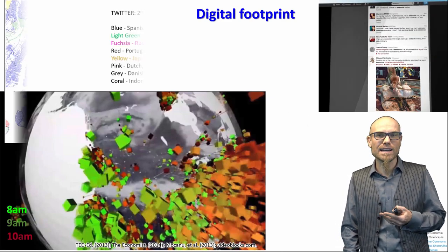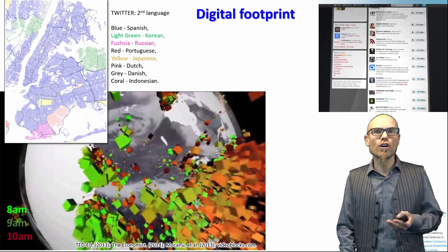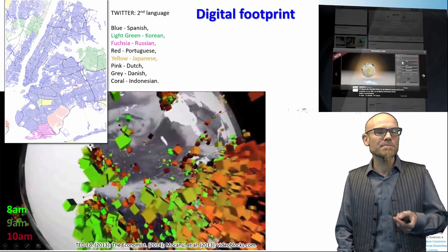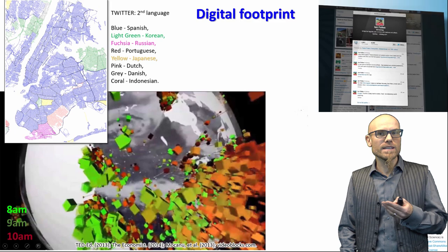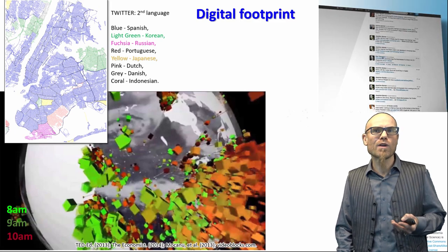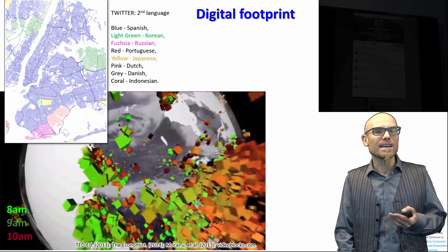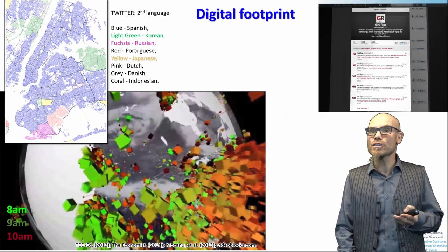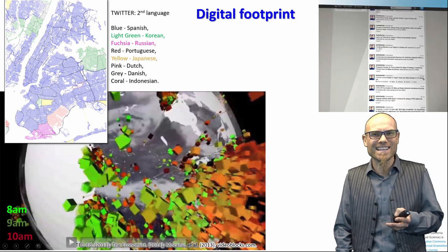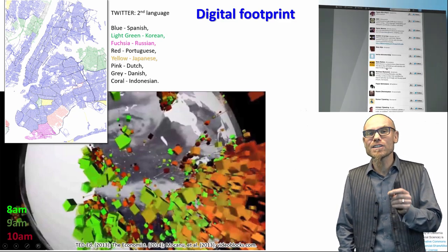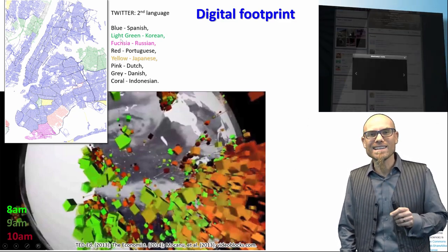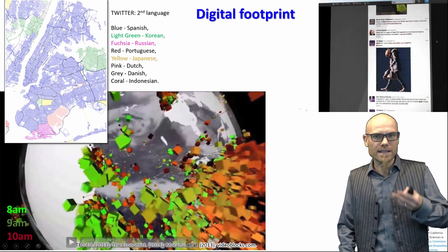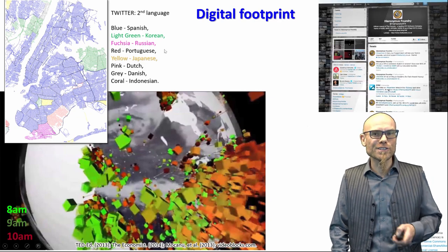This example also uses Twitter data in Manhattan, New York, and we can see where people from different ethnic backgrounds live. They just look at what languages people write in on Twitter, and you can identify Russian communities, Korean communities, Japanese communities. Again, nobody did a survey, nobody asked anything, but very clearly — by block — we can identify where people from different ethnic origins live, because that's the language they tweet in.